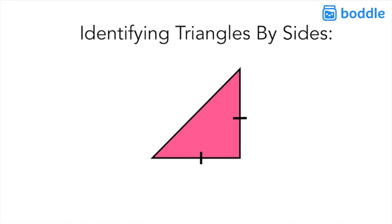Well let's see if we can identify this triangle. Based on what we know about the different types of triangles, what type of triangle do you see on the screen? Is it an equilateral triangle, an isosceles triangle, or a scalene triangle?